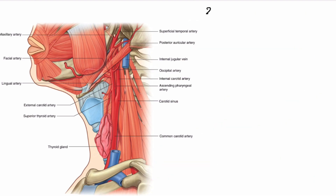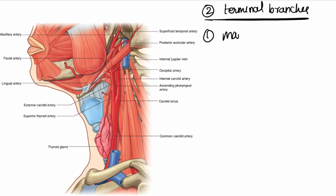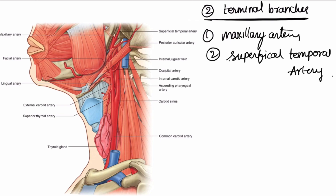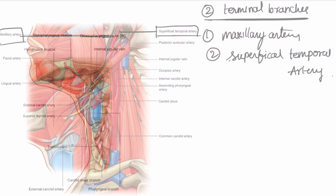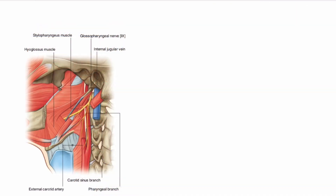The two terminal branches of the external carotid artery are the maxillary artery and the superficial temporal artery. That is all about the arteries.